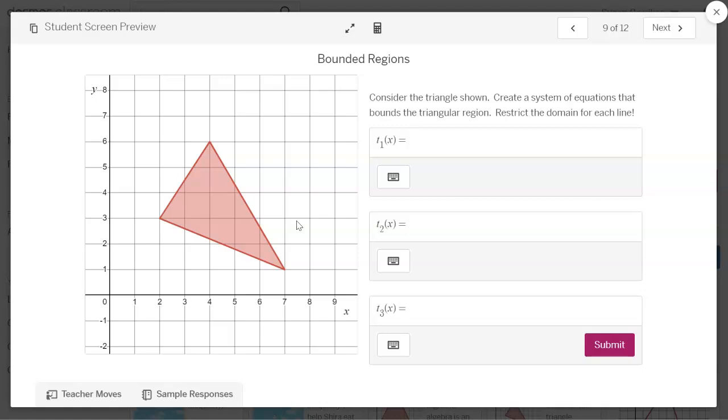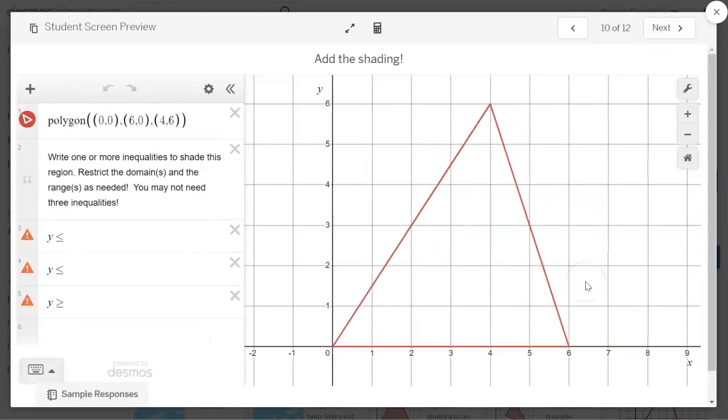And now we're going to do a true bounded region. We're going to try to create inequalities and restrict those inequalities so that the shading only falls inside this polygon. And that is not easy. And I will tell you straight out, they do not use all three of these. They don't need them. They do need to restrict the domain. And they will need to restrict the range. So we've always restricted domains. That's kind of something they're comfortable with, but the range.